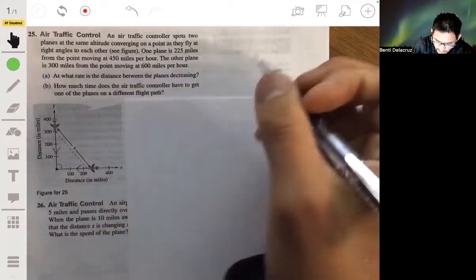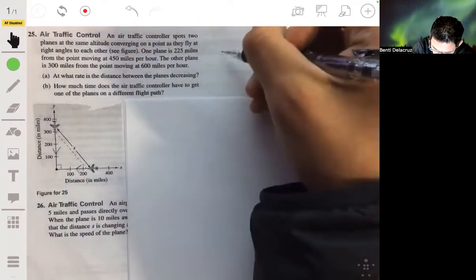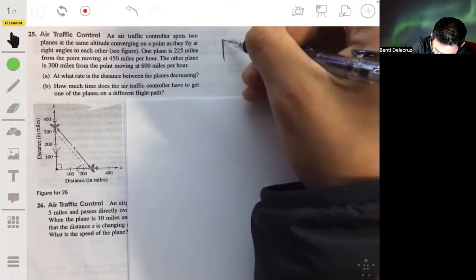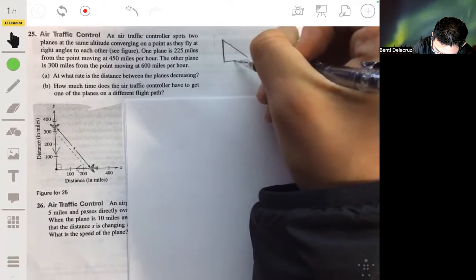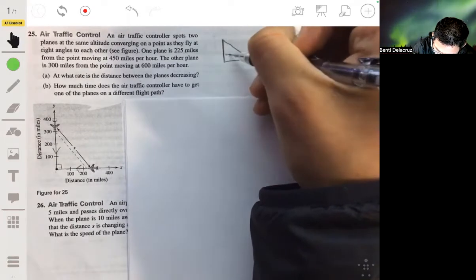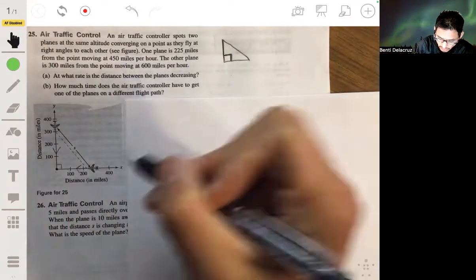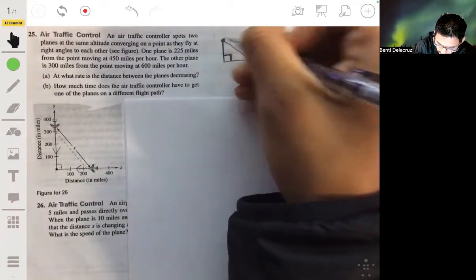So let's redraw this diagram mathematically so we can see a clear triangle. So we have a right triangle here, and you have one plane here and one plane here, so we'll have a point for each plane.